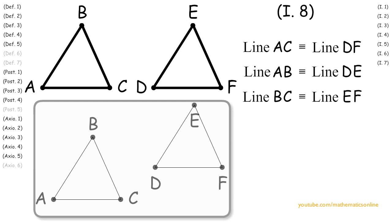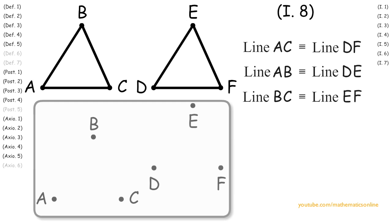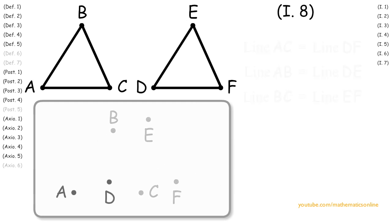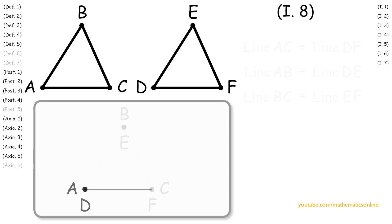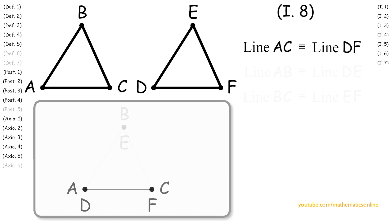Now inside the palette, we will move both triangles so that point A coincides with point D, and the straight line AC coincides with the straight line DF. Since line AC is congruent to line DF, then we know that points C and F coincide with each other.